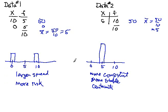Okay. So what we see is that a larger spread of the data is associated with more risk. A smaller spread of the data is associated with more certainty, more consistency.